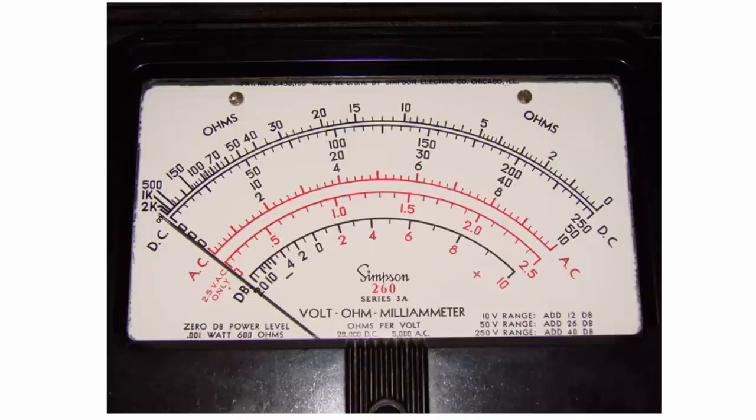The problem was for you to calculate tolerances on a VOM and I have a face of a Simpson 260 on the screen right now because the accuracy of a Simpson VOM and many other VOMs are measured in degrees of arc and not in percent of full scale.